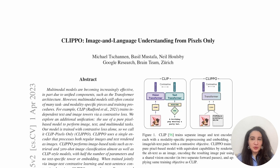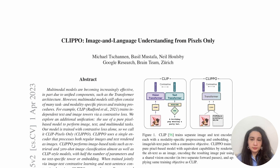Hello everyone. In this video we're going to discuss the paper CLIPO, Image and Language Understanding from Pixels Only, which is a paper from Google Research. Multimodal models are becoming increasingly effective; however, they still often consist of modality-specific pieces and training procedures. For example, CLIP trains independent text and image towers via contrastive loss. The authors present a pure pixel-based model to perform image, text, and multimodal tasks using a single encoder, trained with contrastive loss only, called CLIP Pixels Only, or CLIPO.